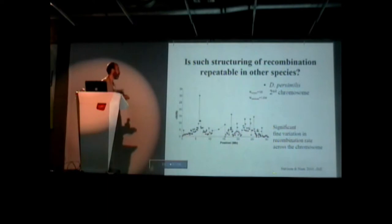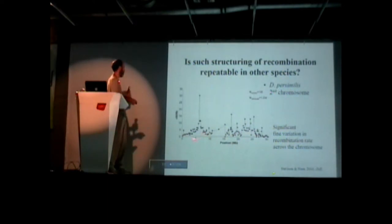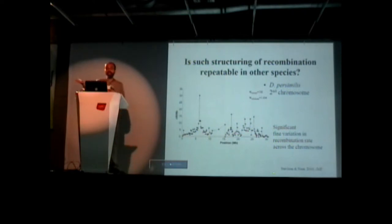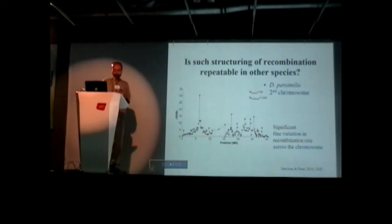Even in other species — this is D. pseudoobscura and D. miranda — we see peaks in recombination. Again, these are essentially recombination hotspots. We do see significant variation there as well.